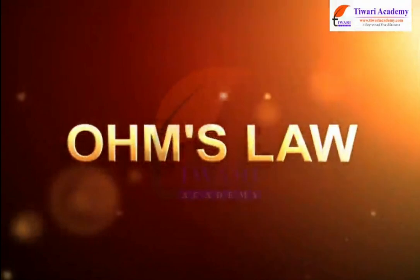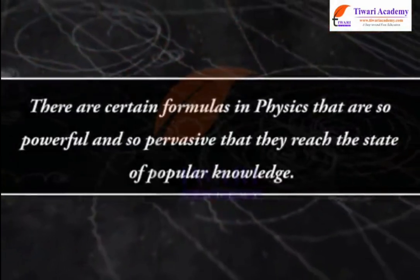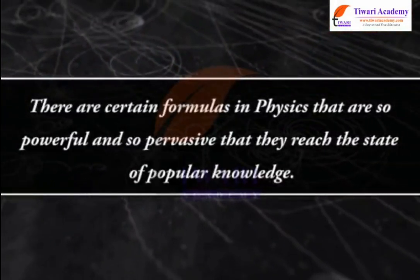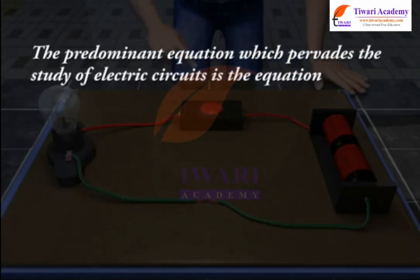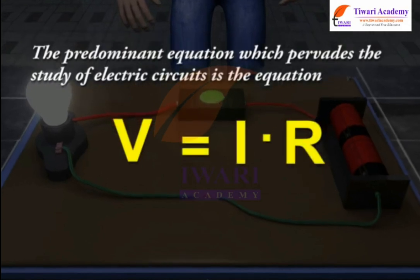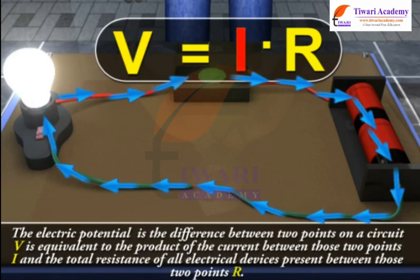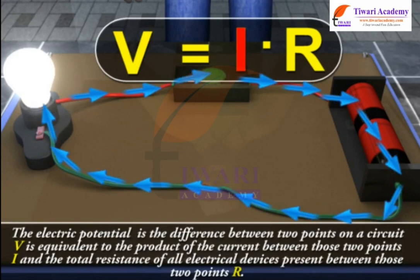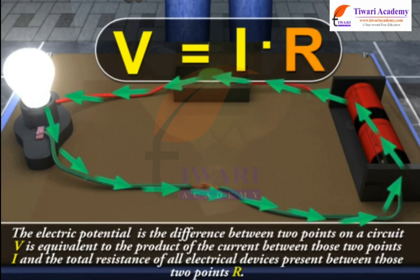Ohm's Law. There are certain formulas in physics that are so powerful and so pervasive that they reach the state of popular knowledge. The predominant equation which pervades the study of electric circuits is V = IR. In words, the electric potential difference between two points on a circuit V is equal to the product of the current between those two points I and the total resistance of all electrical devices present between those two points R.